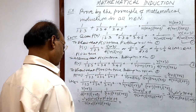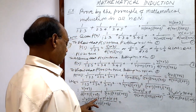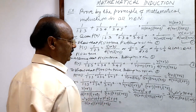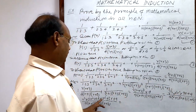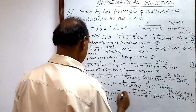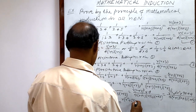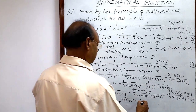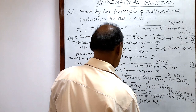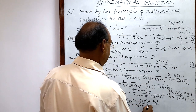Taking r common from the first three terms: r(r²+5r+4) + (r²+5r+4). Both parts share the factor (r²+5r+4), so we take it common to get (r²+5r+4)(r+1). The denominator is 4·(r+1)·(r+2)·(r+3), so (r+1) cancels.